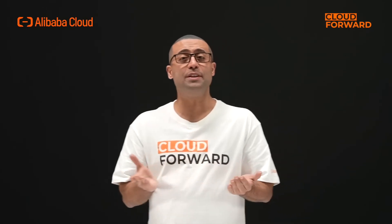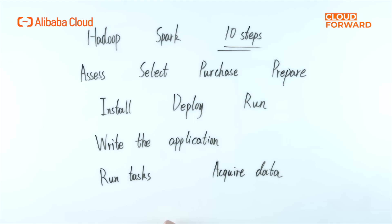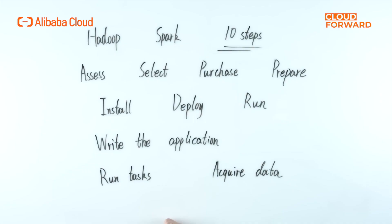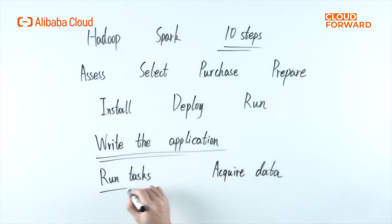Normally, when we deal with distributed processing systems such as Hadoop and Spark, users need to complete a total of 10 steps to work. There are seven steps of preparation: assess business characteristics, select machine types, purchase machines, prepare hardware environments, install operating systems, then deploy Hadoop or Spark and run the cluster — followed by three steps of real importance: write the application, run tasks, and acquire data.